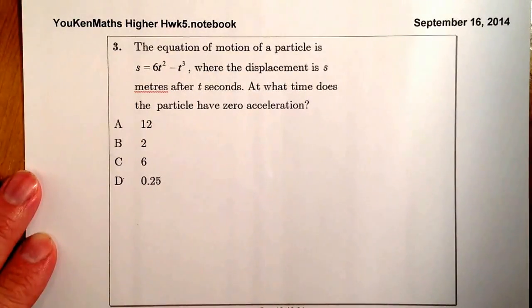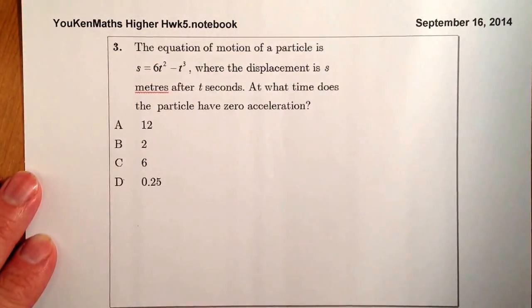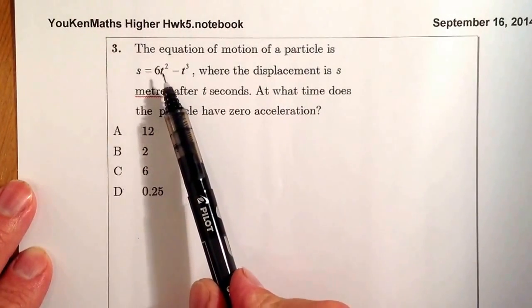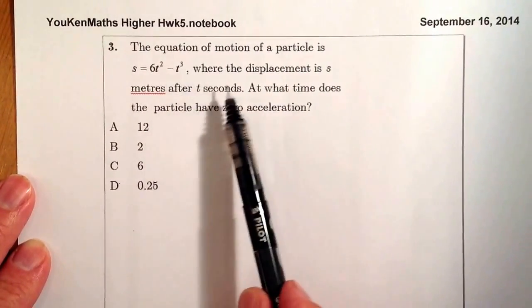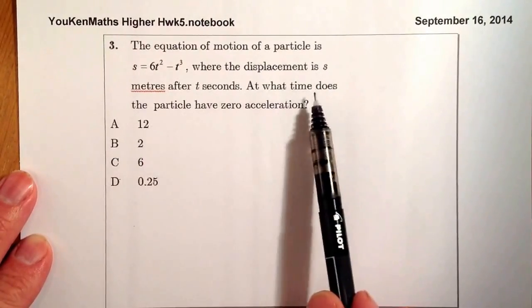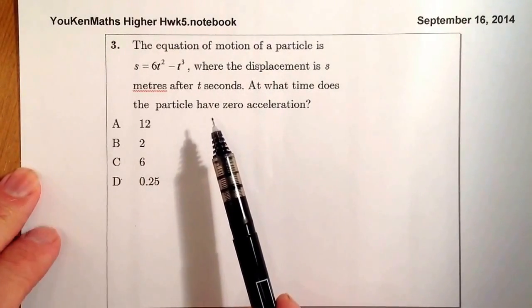This is Higher Homework 5, and we're looking at question 3. The equation of motion of a particle is s equals 6t squared minus t cubed, where the displacement is s metres after t seconds. At what time does the particle have zero acceleration?